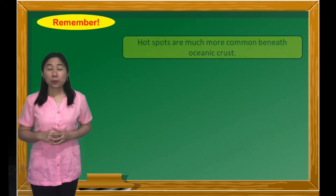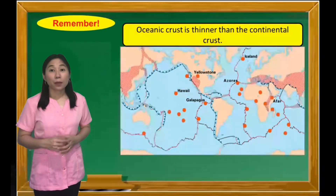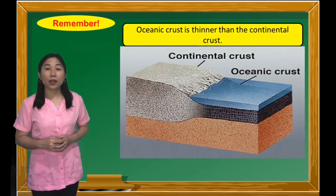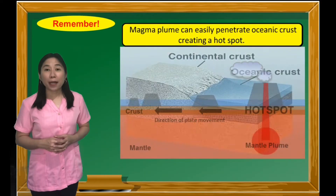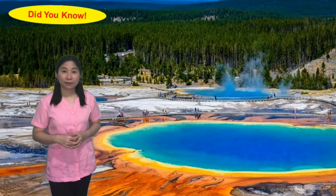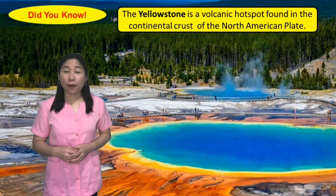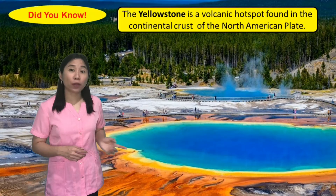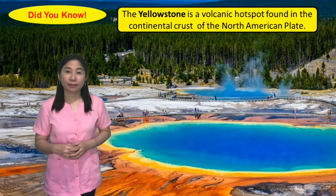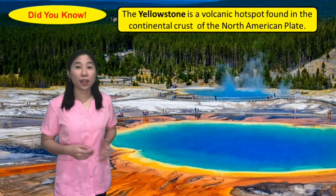Remember, hotspots are much more common beneath oceanic crust, because oceanic crust is thinner than the continental crust. That's why magma plume can easily penetrate oceanic crust, creating a hotspot. Did you know? The Yellowstone is a volcanic hotspot found in the continental crust of the North American plate, and responsible for a large scale of volcanism in the area.